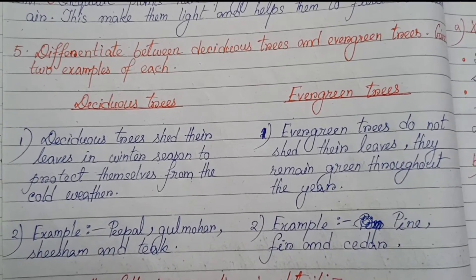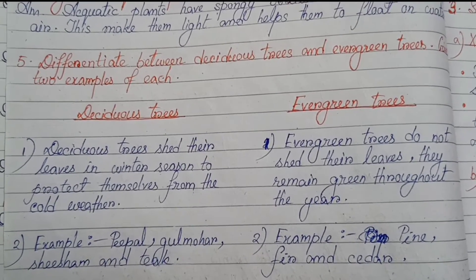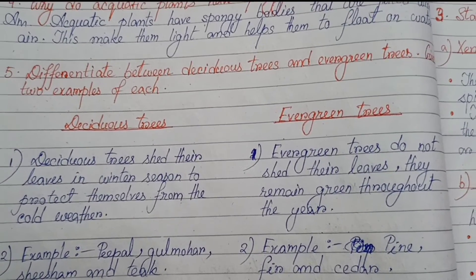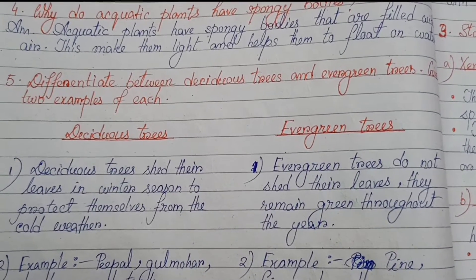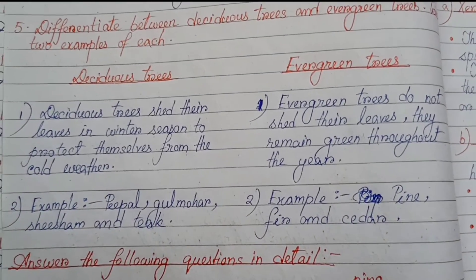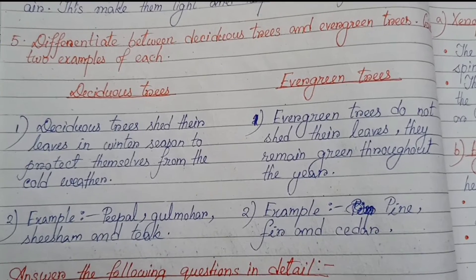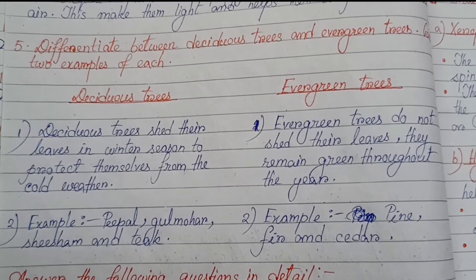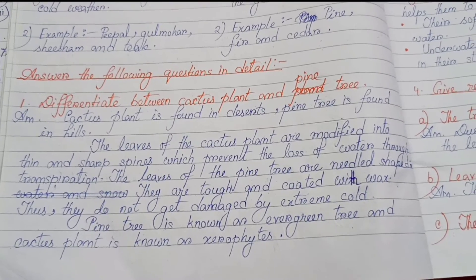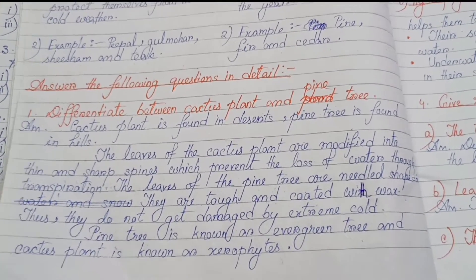Number five: differentiate between deciduous trees and evergreen trees, and give two examples of each. Deciduous trees shed their leaves in winter season to protect themselves from the cold weather. Evergreen trees do not shed their leaves — they remain green throughout the year. Examples of deciduous trees: peepal, gulmohar, shisham, and teak. Examples of evergreen trees: pine, fir, and cedar.